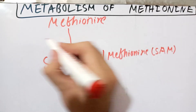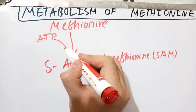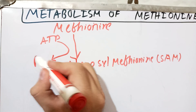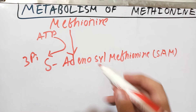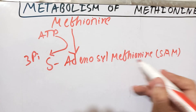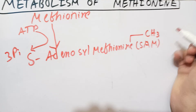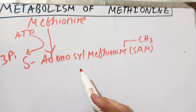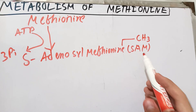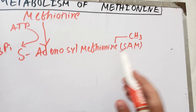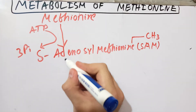The adenosine comes from ATP — adenosine triphosphate. The ATP will be released as three inorganic phosphates, and the adenosyl group will be added. This S-adenosyl methionine has a methyl group attached to it, and this methyl group is activated by the addition, making S-adenosyl methionine act as a donor of the methyl group.